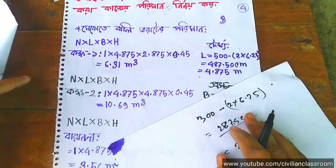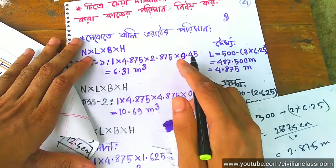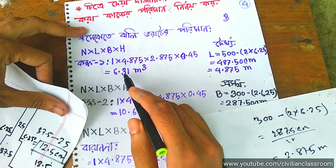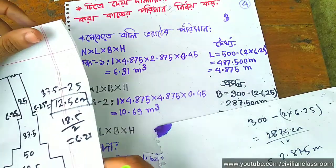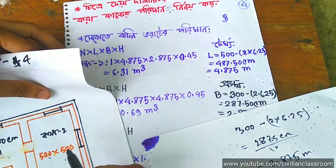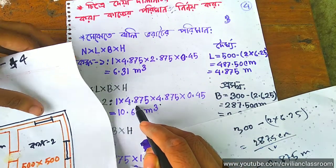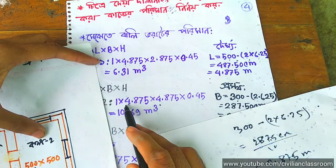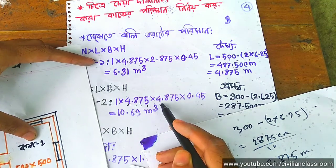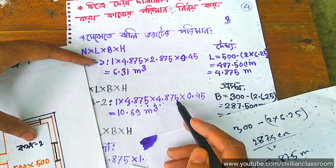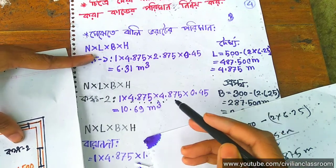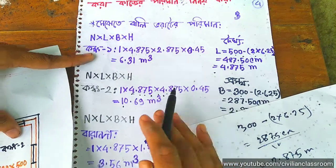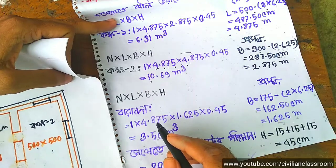This is 4.5 cm, which is minus 4.5 cm — measurement of speed. So this result is 1 B or L — same thing — so this result is 5 minus 2 into 6.25, so this result is 4.875 into 0.45 meter, so this result is 10.65 meter cube. It is also 2x, so this result is 5.